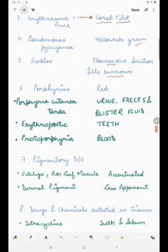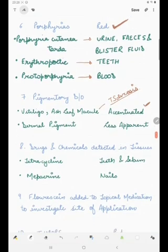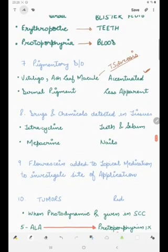The porphyria disorders. All the porphyrias will appear red under Wood's lamp examination. However, in different porphyrias, we need to know what is to be examined. In porphyria cutanea tarda, you need to examine the urine, feces, and the blister fluid. In erythropoietic porphyria, you need to examine the teeth and it fluoresces red. Pigmentary disorders such as vitiligo and ash leaf macule seen in tuberous sclerosis will be accentuated because it is an epidermal pigmentary disorder. Whereas dermal pigmentation like nevus anemicus will become less apparent.